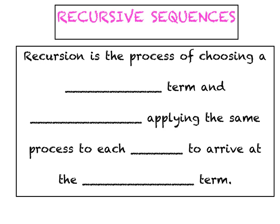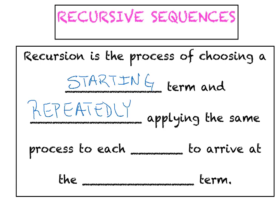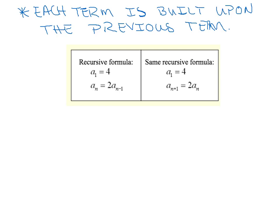Recursion is the process of choosing a starting term, and repeatedly applying the same process to each term to arrive at the following term. What you're going to find out today is that each term is very dependent on the previous term. For instance, we cannot find the 100th term unless we first know the 99th term. We can't skip or leapfrog from the fourth term all the way to the 100th term. Recursion is a step-by-step process where each term is built upon and dependent upon the previous term.